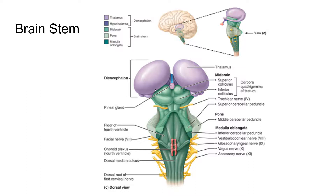The brainstem controls a lot of the autonomic function necessary for survival. The midbrain plays a role in pain suppression and the fight or flight response. It takes in things that you're hearing and seeing — so it has visual and auditory relay centers. Like if you see a pack of wild dogs running at you, your brainstem is going to help you know that's dangerous. We sense danger before we even have experience with things because of our evolutionary heritage.